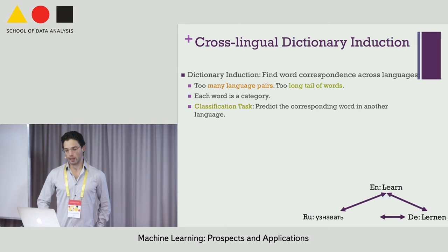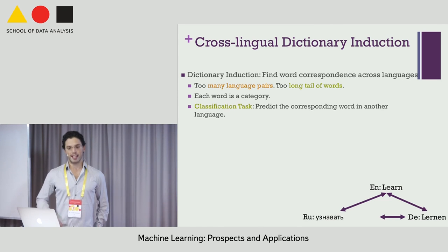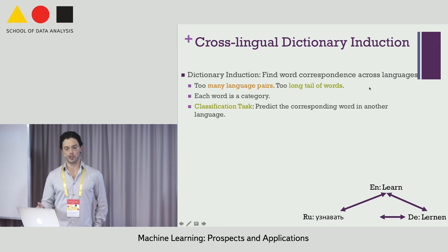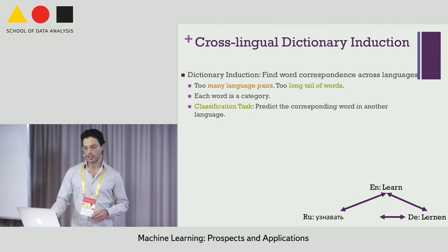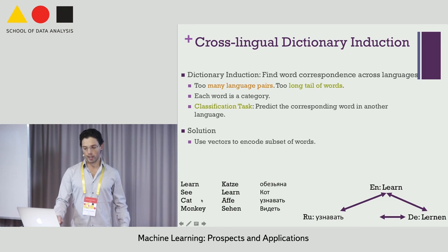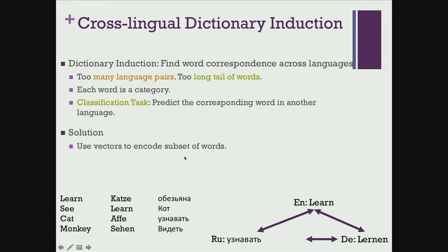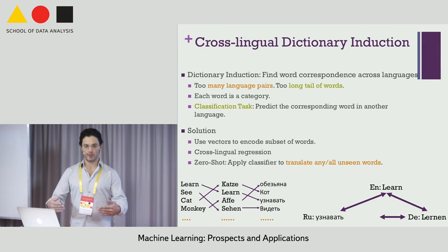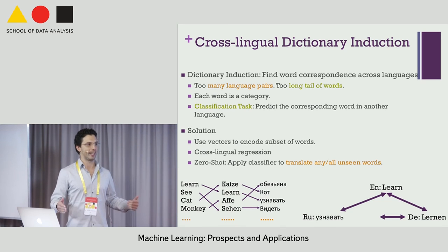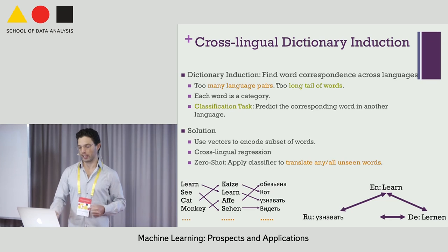Another application is cross-lingual dictionary induction. There are many language pairs for which you might want dictionaries, and languages have long tails of rare words. Using word2vec or co-occurrence statistics, we generate continuous vectors for every word. Given a small subset of words known in common between two languages, we train regression models to map between those subsets, then apply that mapping via zero-shot connections to the entire long tail of words.